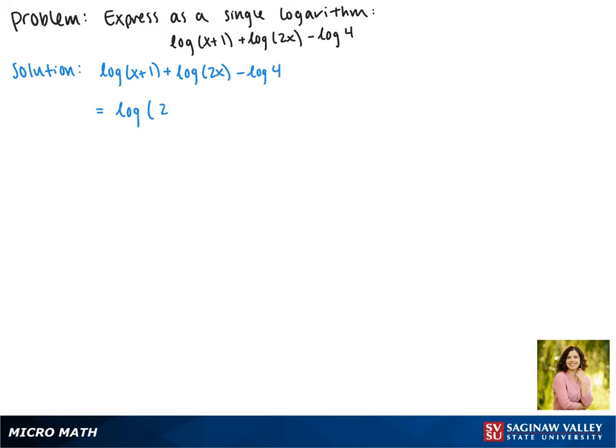So this can be written as the log of 2x times the quantity x plus 1 minus the log of 4.